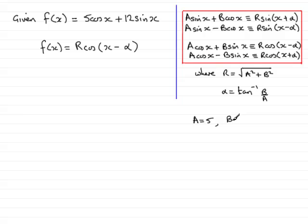And so that means that r is going to be the square root of 5 squared plus 12 squared. So r equals the square root of 5² plus 12², and if you work that out that's the square root of 25 plus 144, which is the square root of 169, which is 13.